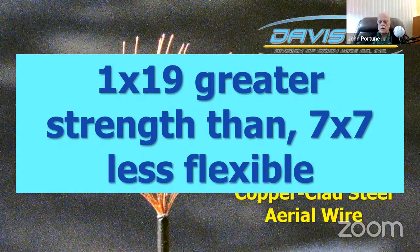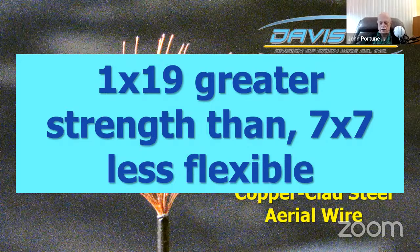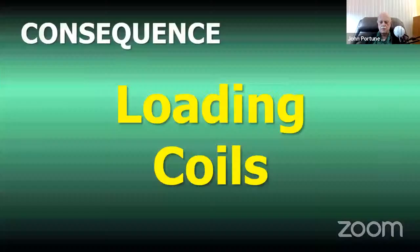The Polystealth wire is the 1×19 stuff — a little stronger than the 7×7 configuration, but a little less flexible.